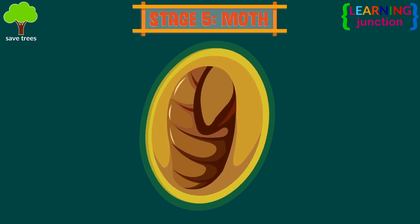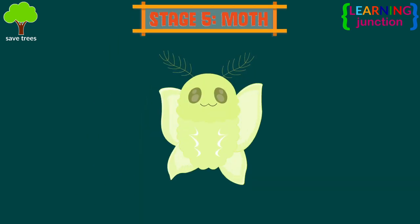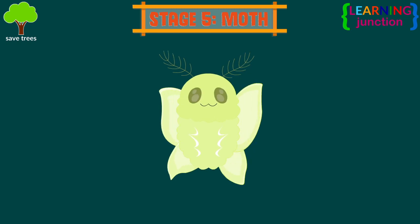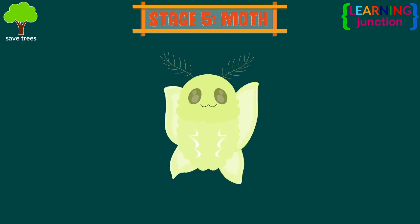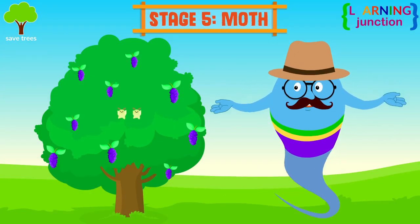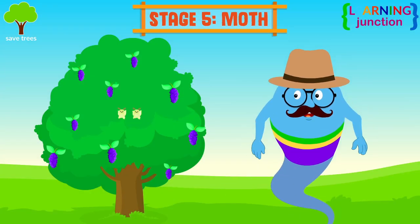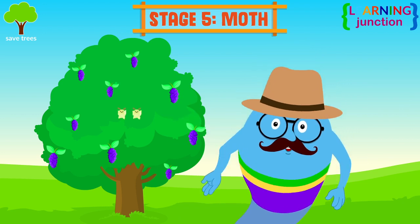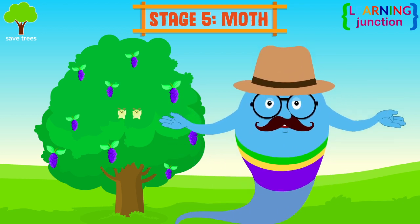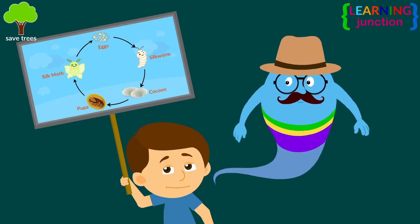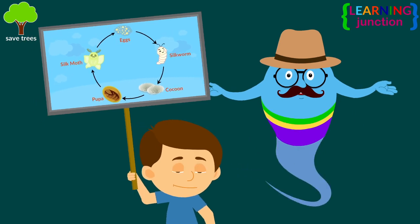Stage 5: Moth. It is the final stage where pupa changes into an adult moth. The female moth lays eggs after mating and thus the life cycle of silkworms begins again. Can you show the chart to your friends?